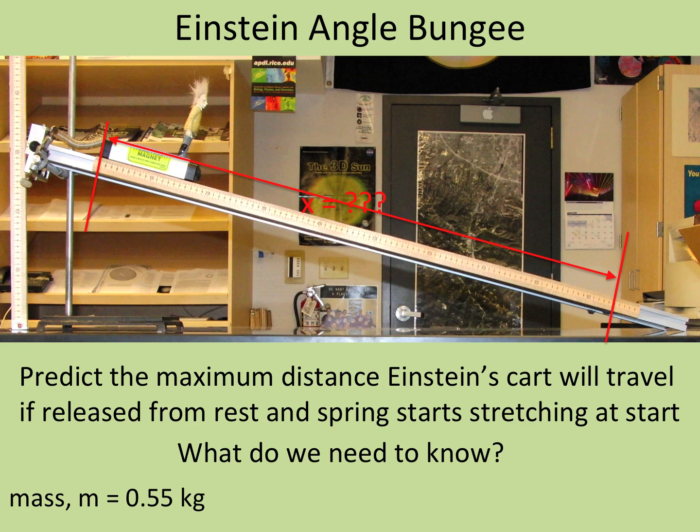We also need to know the angle. I've got a 30 centimeter height, and this length is about 122 centimeters. If you do an inverse sine of 30 over 122, you get 14°. The spring constant is about 3 newtons per meter.